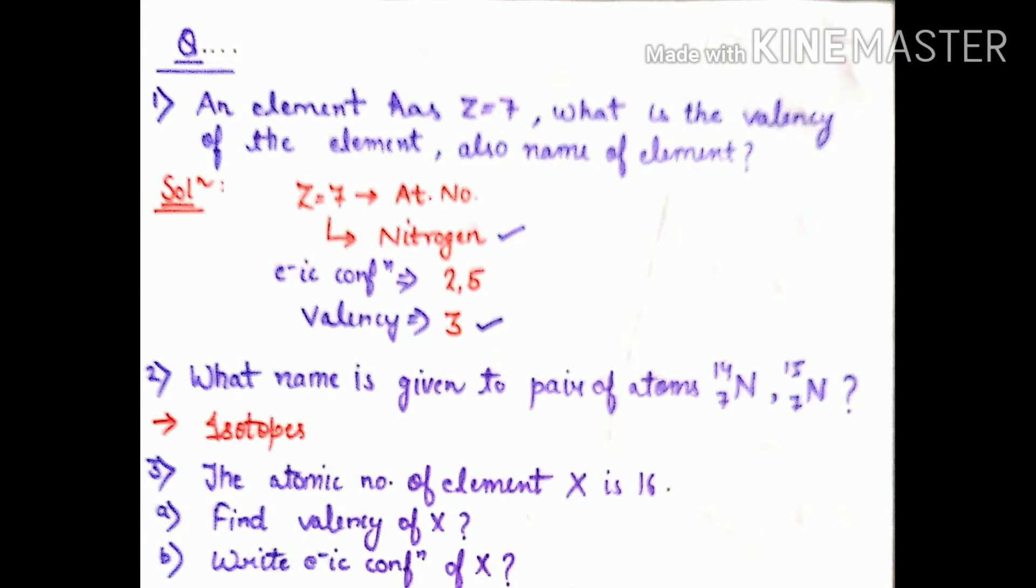Question number 3: The atomic number of element X is 16. Find the valency of X and write electronic configuration of X. Atomic number 16 belongs to sulfur. The electronic configuration will be 2,8,6.